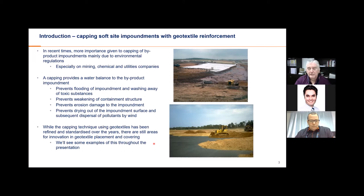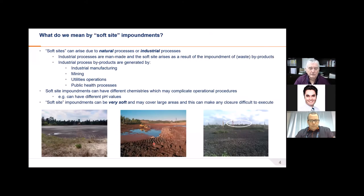While the capping technique using geotextiles has been refined and standardized over the years, there are still areas for innovation regarding geotextile placement and covering of soft site impoundments. Soft sites can arise due to natural processes such as sediment runoff into a depression, but more often they arise from industrial processes — specifically the impoundment of waste by-products from industrial manufacturing, mining, utilities operations, and public health processes.